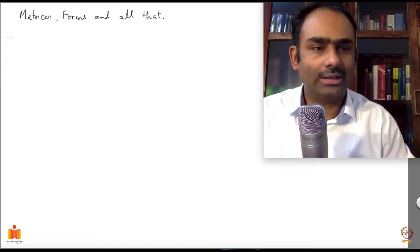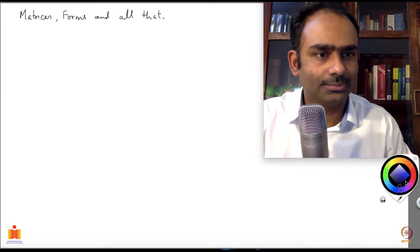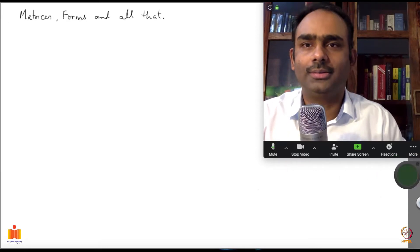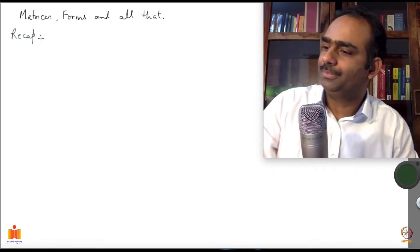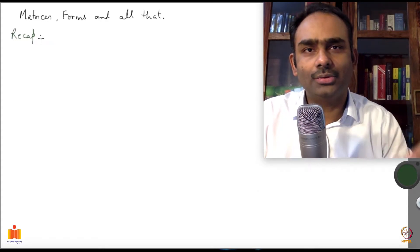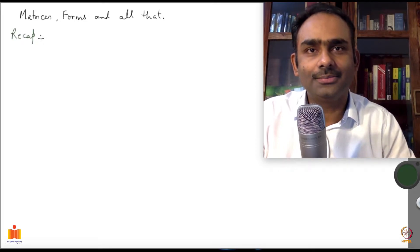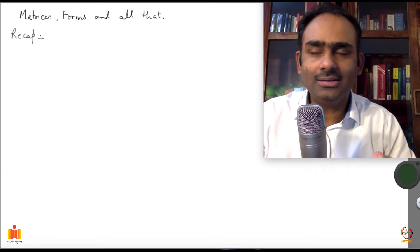Let me do a quick recap. Last time we saw that we can decompose any n cross n matrix into a traceless symmetric part, a part which contains the trace which is proportional to identity, and an anti-symmetric part.